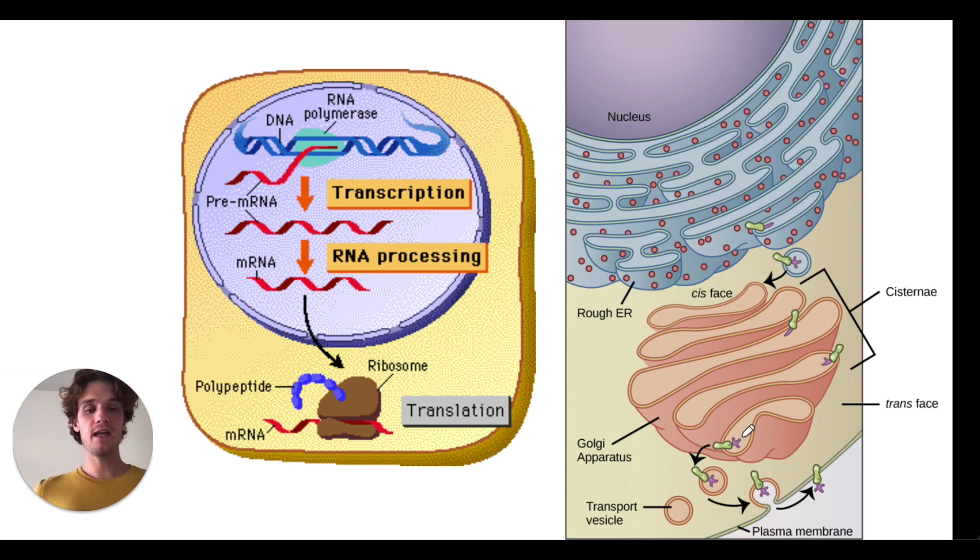And then if we want this protein to be excreted like insulin or if we want it to be present on the outside like a transmembrane ion channel then what happens is this stays in a little vesicle and then it gets sent from the Golgi apparatus and transported to the membrane.